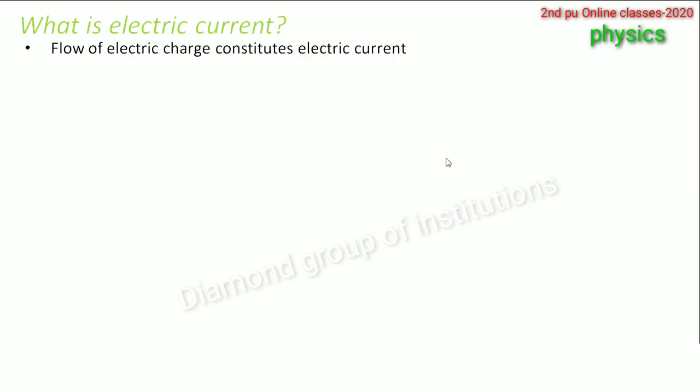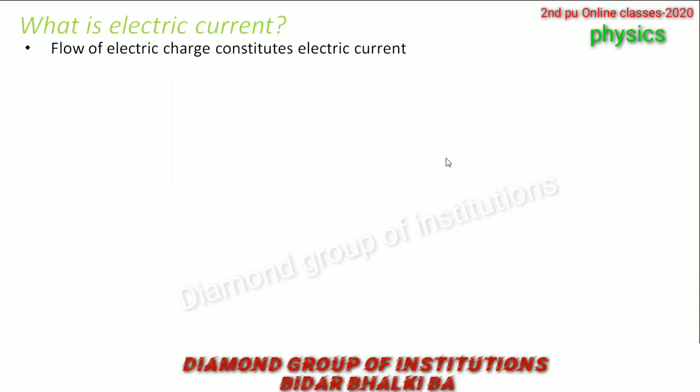Let us start with: what is electric current? Electric current comes into picture when I talk about charges in motion. As long as we imagine that a charge is at rest and not going anywhere, we talk about electrostatics — the branch which deals with the study of charges at rest. The moment charges start moving, we no more talk about statics but about dynamics. The flow of charges constitutes electric current. So electric current is nothing but when charges flow, electric current is set up.